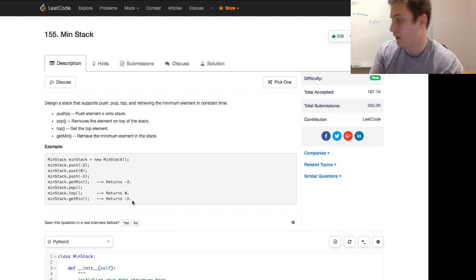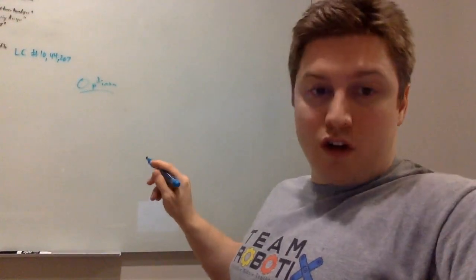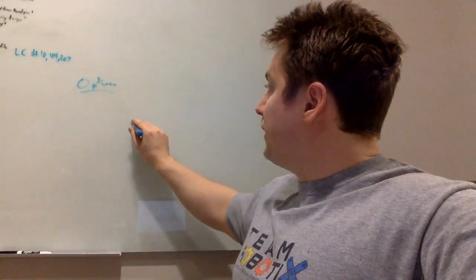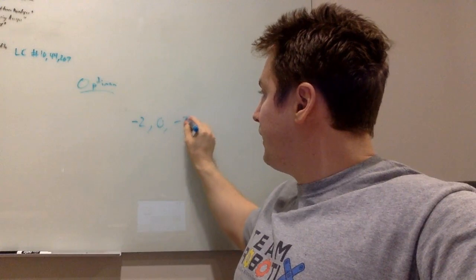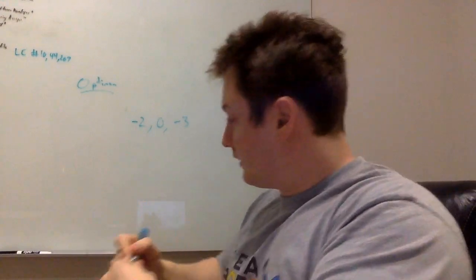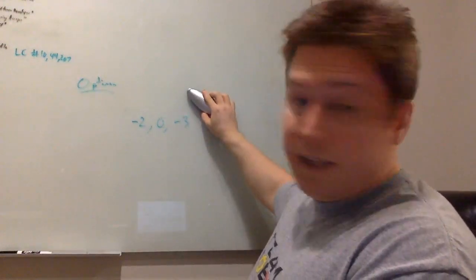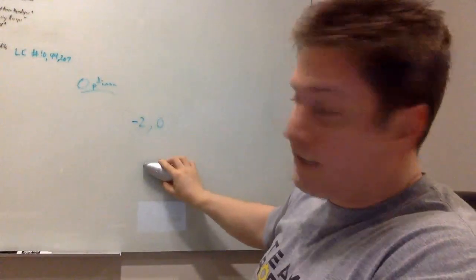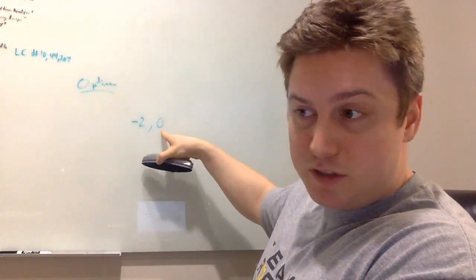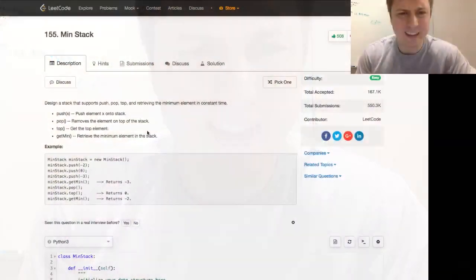So we push negative two, zero, negative three. We do getMin and it returns negative three. Then we pop, removing the last element added. The top is now zero, and then getMin returns negative two. Hopefully that illustrates the concept.